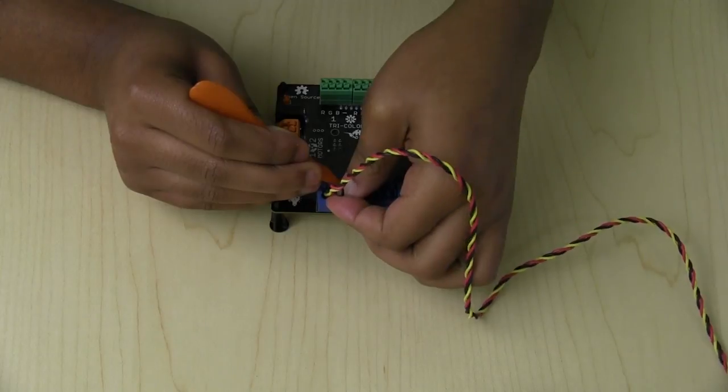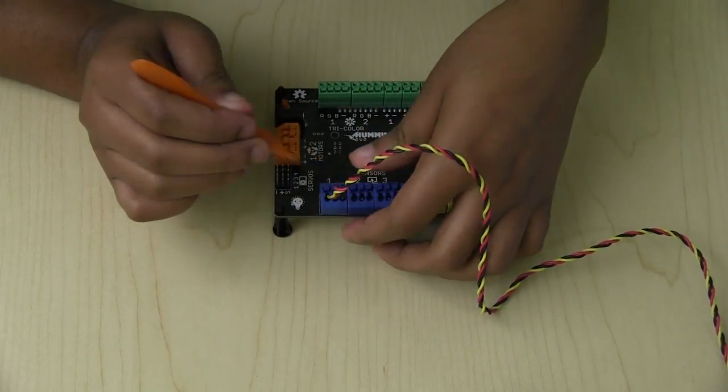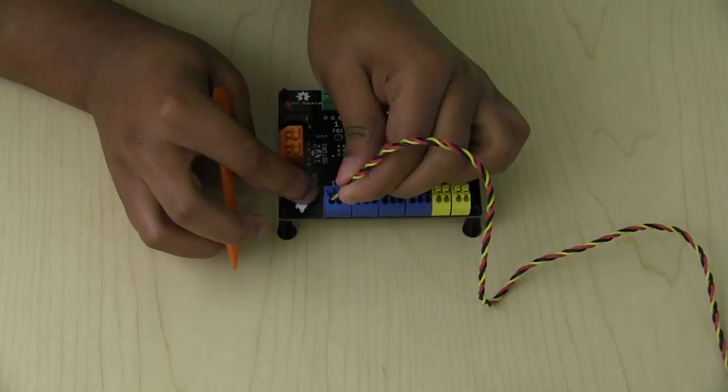The yellow wire connects to a sensor port S terminal, the red wire to the plus terminal, and the black wire to the negative terminal.